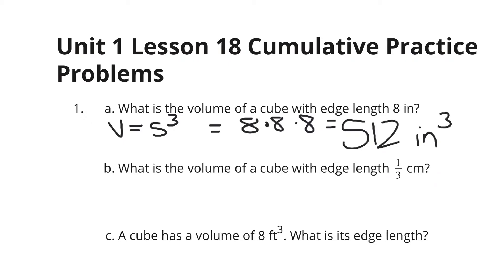What is the volume of a cube with edge length 1/3 centimeter? Well, volume is still equal to the edge length to the third power, so we're really looking at 1/3 to the third power, which is simply 1/3 times 1/3 times 1/3, which is 1/27 cubic centimeters.